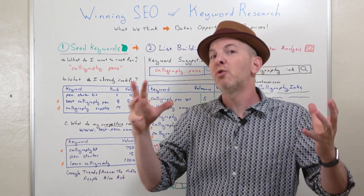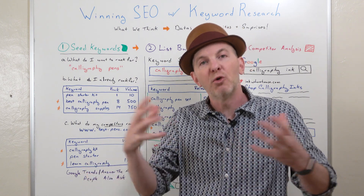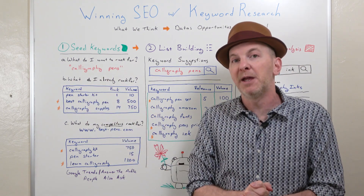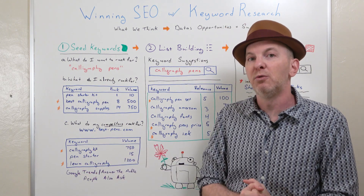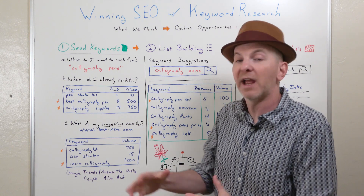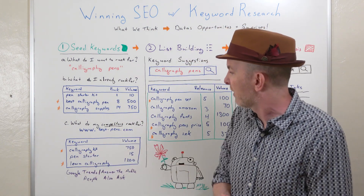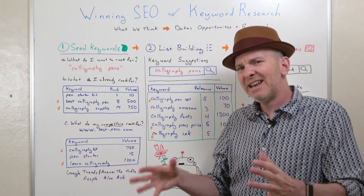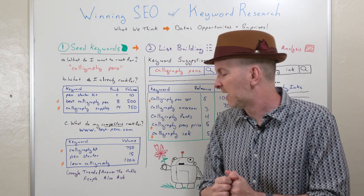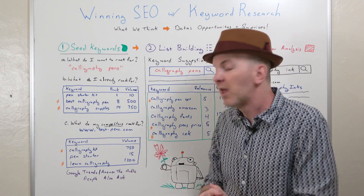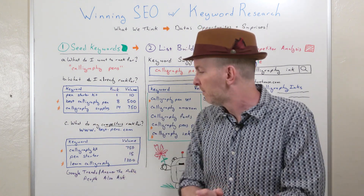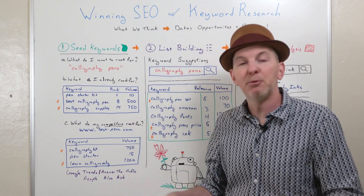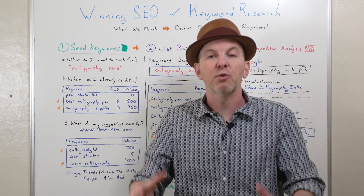Finally, let's say you don't have an existing website or you're starting a new project from scratch and don't have a lot of existing data. You want to ask: what do my competitors rank for, or the top ranking site? I might Google 'calligraphy pens' and see who ranks number one, pop it into Keyword Explorer, and see all their ranking keywords to find good seed keywords. I can see that they rank for 'calligraphy kit' — that sounds pretty relevant, 750 visits a month. 'Pen starter' — not so much, I'd probably throw that one out. 'Learn calligraphy' — that's a great seed keyword, 1,200 visits a month. You can get seed keywords from literally any keyword tool. Some favorites beyond Keyword Explorer: Google Trends, Answer the Public has a great free option, and 'People Also Ask.' Anywhere you want to get your seed keywords, that's where you form the basis of your list.